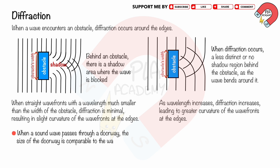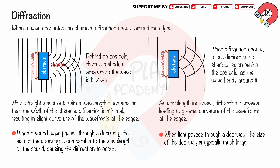When a sound wave passes through a doorway, the size of the doorway is comparable to the wavelength of the sound, causing diffraction to occur. When light passes through a doorway, the size of the doorway is typically much larger than the wavelength of light, resulting in no diffraction.